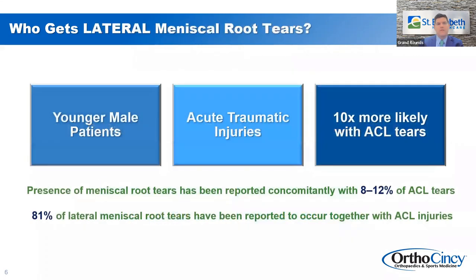Lateral meniscal root tears typically affect younger male patients with more acute traumatic injuries. These are 10 times more likely to be associated with an ACL tear. The presence of a meniscal root tear has been reported to occur concomitantly with an ACL injury in 8 to 12% of ACL tears, and about 81% of lateral meniscal root tears have been reported to occur together with an ACL injury.